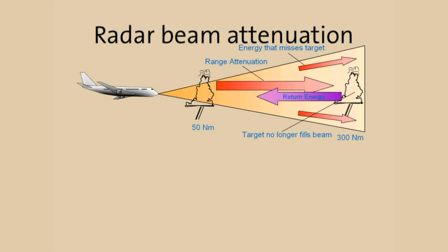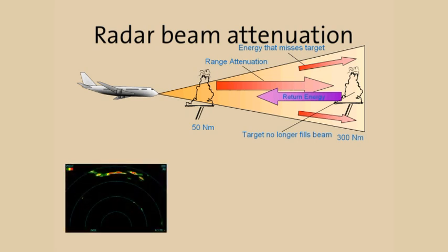As these storms approach the aircraft, more of the cell is visible. In these pictures, note how the radar sees the line of cells at 300 nautical miles.